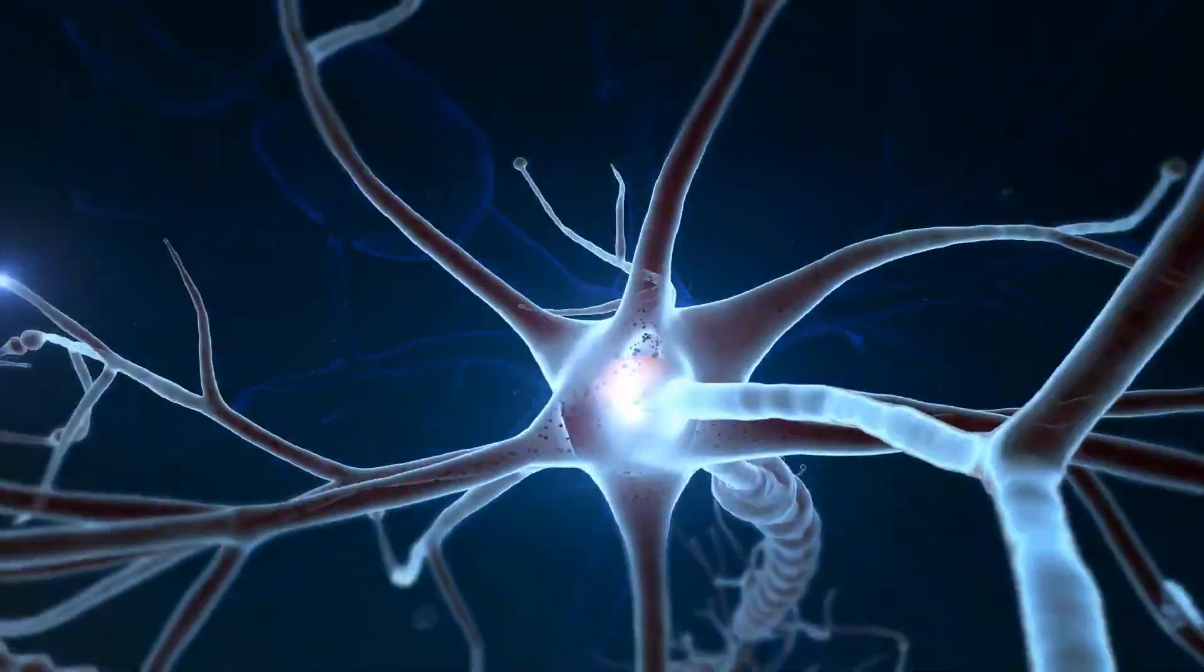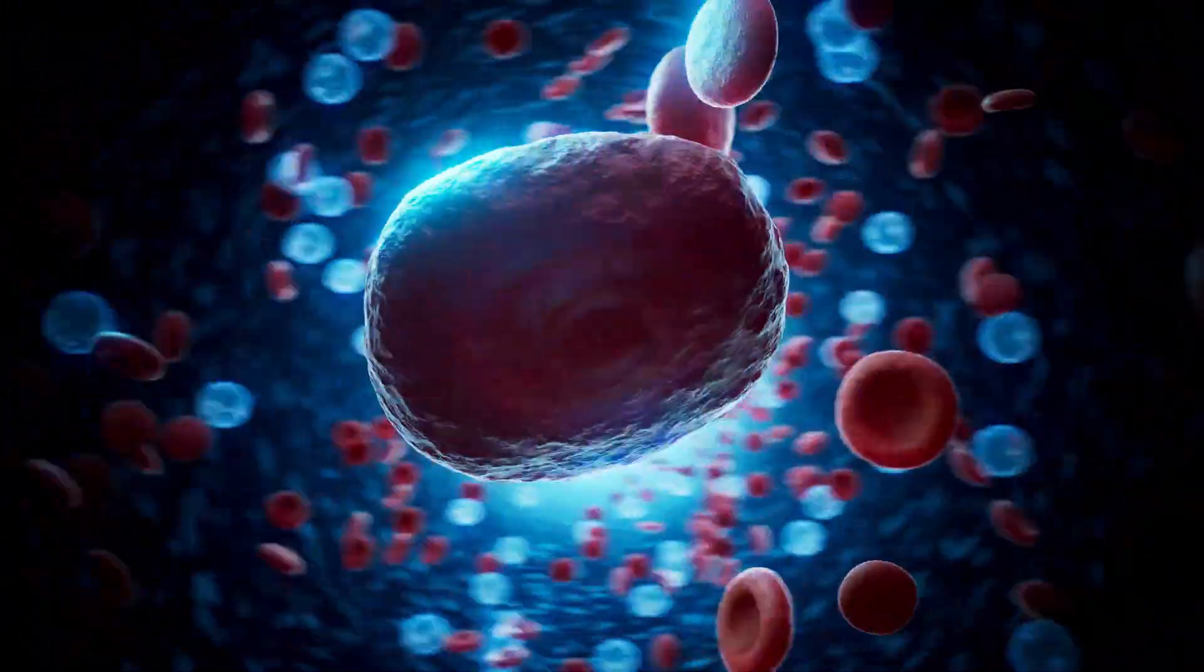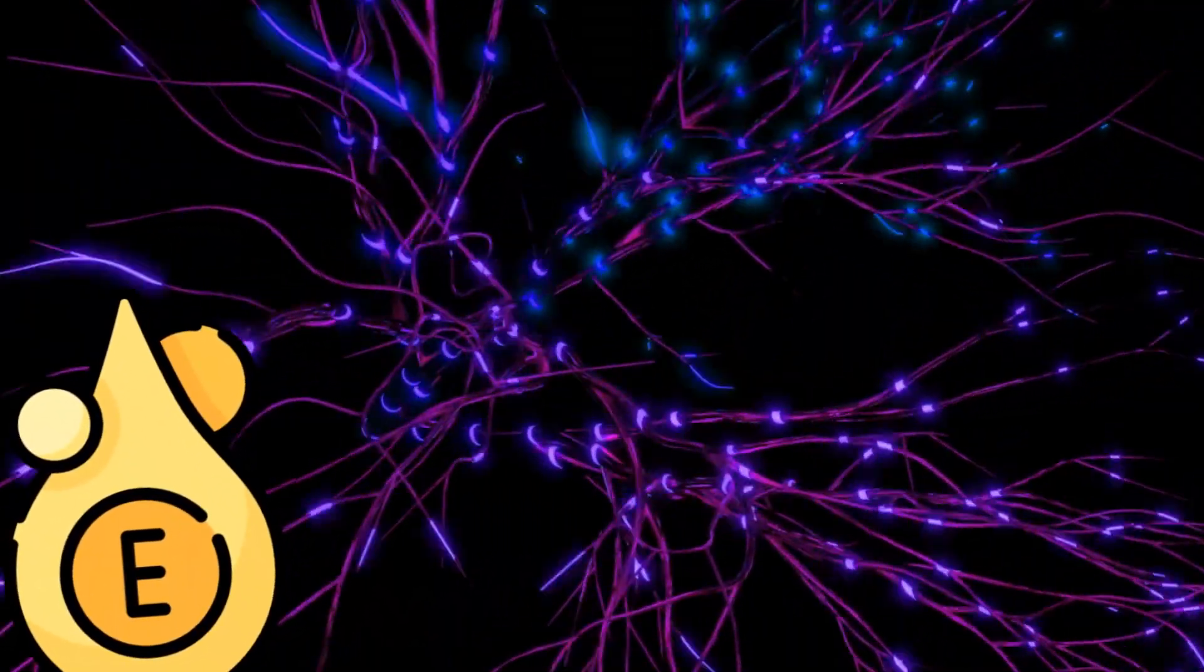Tocopherols and tocotrienols, the active forms of E, are like tiny warriors protecting your nerve membranes. By reducing inflammation and boosting blood circulation, vitamin E ensures your nerves get enough oxygen and nutrients to thrive.